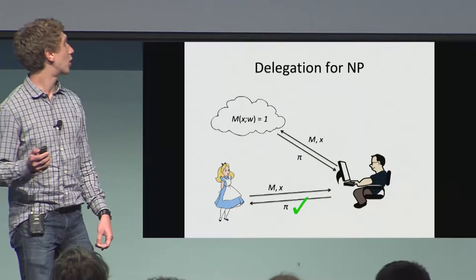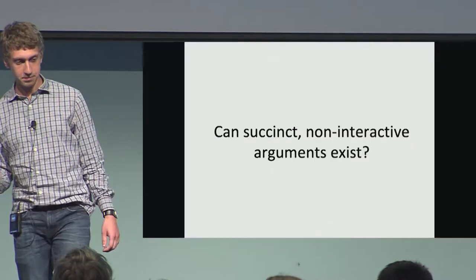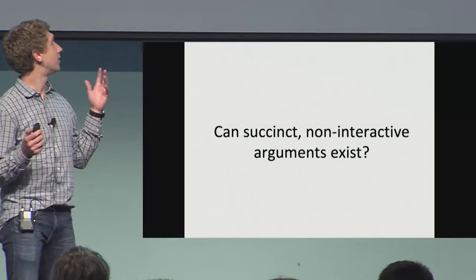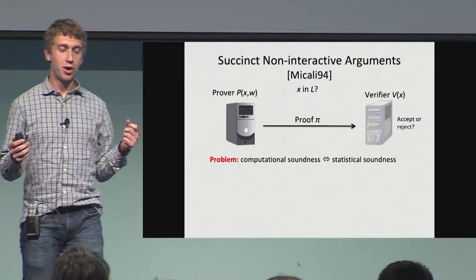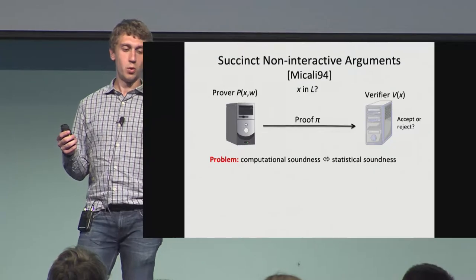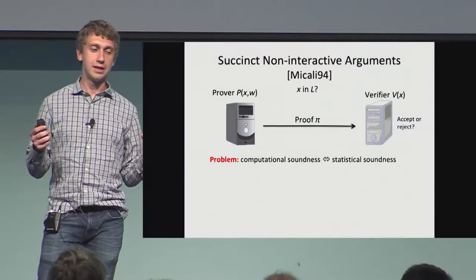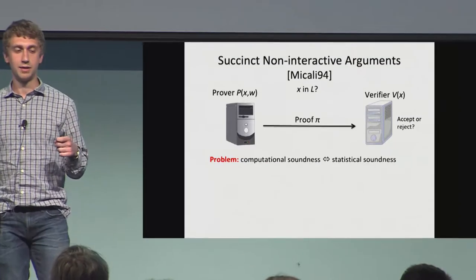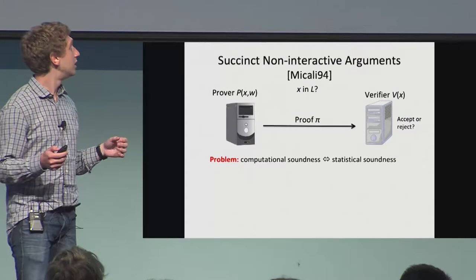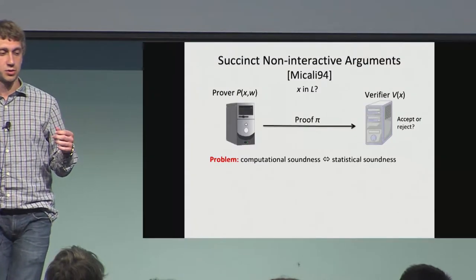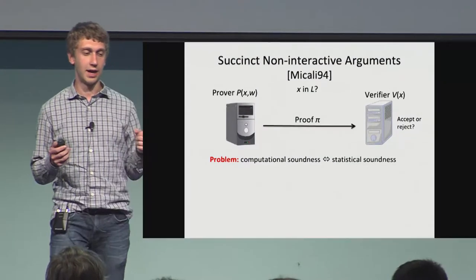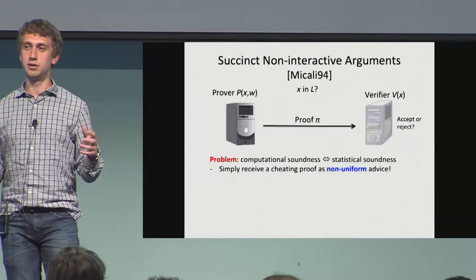In this setting, the programmer is able to just send a proof over to Alice and she'll be convinced. The question we ask in this work is whether these ideal objects — succinct non-interactive arguments — can actually exist. The problem is that this notion of computational soundness actually collapses to statistical soundness, where any computationally unbounded prover can find a false proof convincing a verifier of a statement not in the language. If such a false proof exists, a non-uniform adversary can just receive it hard-coded into its advice, which breaks computational soundness.